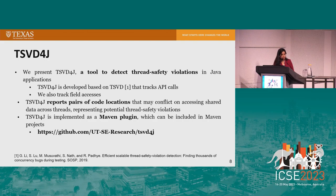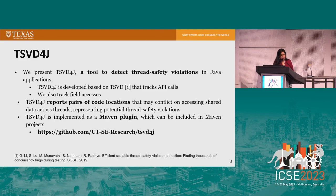We present TSVD4J, a tool to detect thread safety violations in Java applications. TSVD4J is developed based on the TSVD approach proposed by Microsoft Research for C# applications, which tracks only API calls. In addition to API calls, our tool also tracks all field accesses. TSVD4J reports a list of code locations that may conflict on accessing shared data across multiple threads, and is implemented as a Maven plugin.